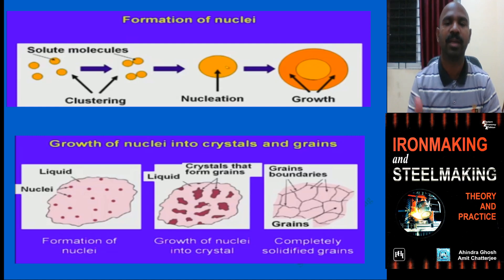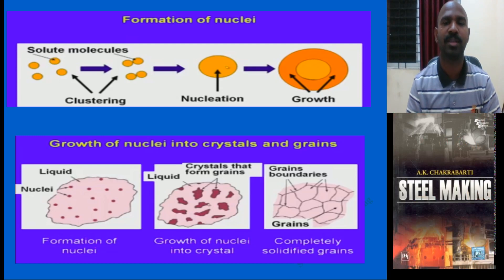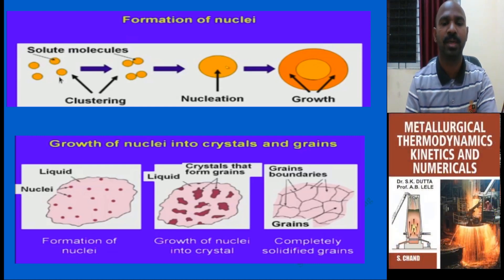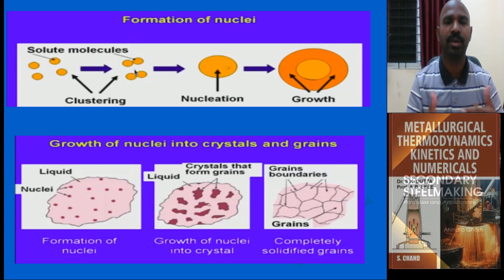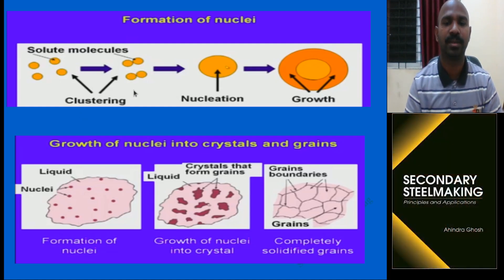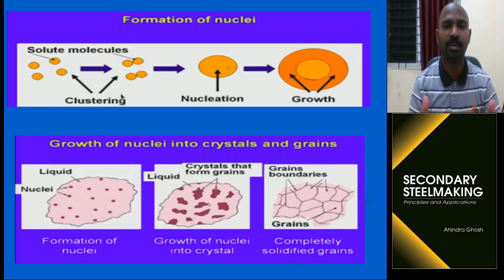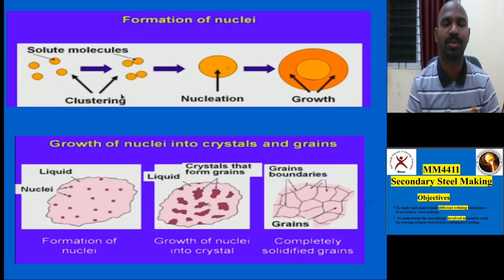Let me explain how inclusion nuclei form. In simple schematic terms, molecules are arranged in the liquid state. In the solid state, molecules cluster together due to temperature and pressure changes — this is driven by free energy. When the free energy decreases, a nuclei begins to form. A cluster of approximately four atoms or molecules forms a nuclei, which then further grows and converts into the form of a grain. This is the nuclei-to-grain conversion process.